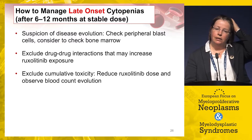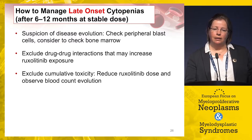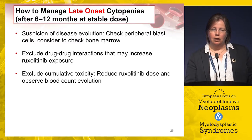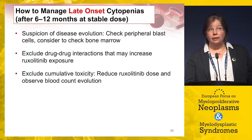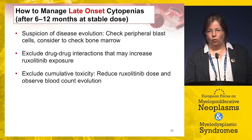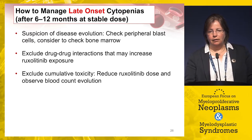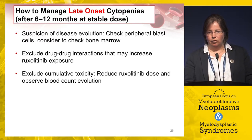Remember that disease can evolve differently in a patient on a JAK inhibitor. You need to look at the blood film for blasts, think about bone marrow assessment, exclude drug-drug interactions remembering CYP3A4 metabolism, and exclude cumulative toxicity.